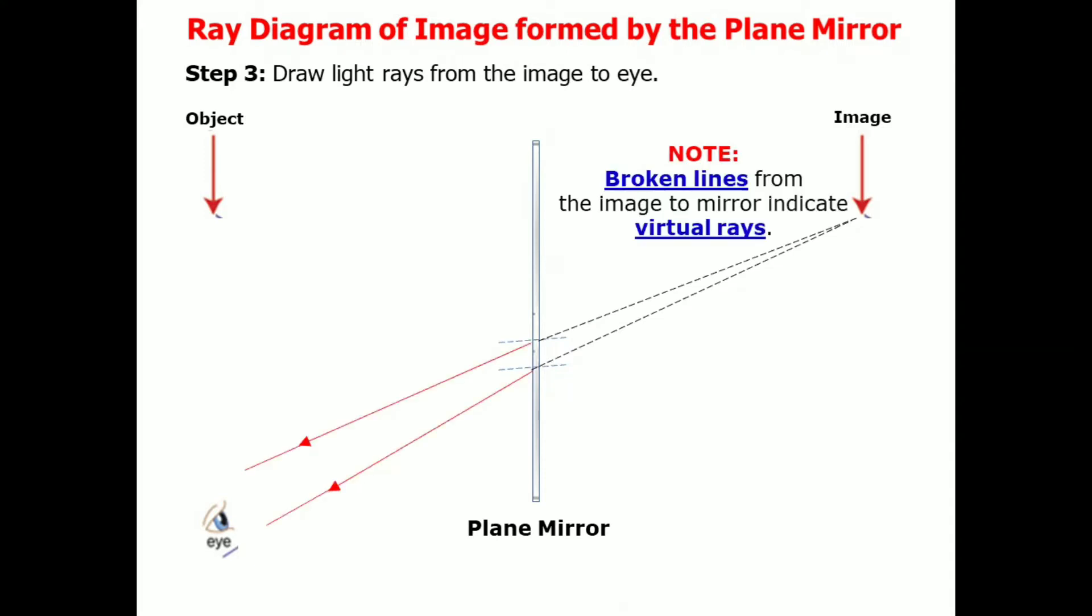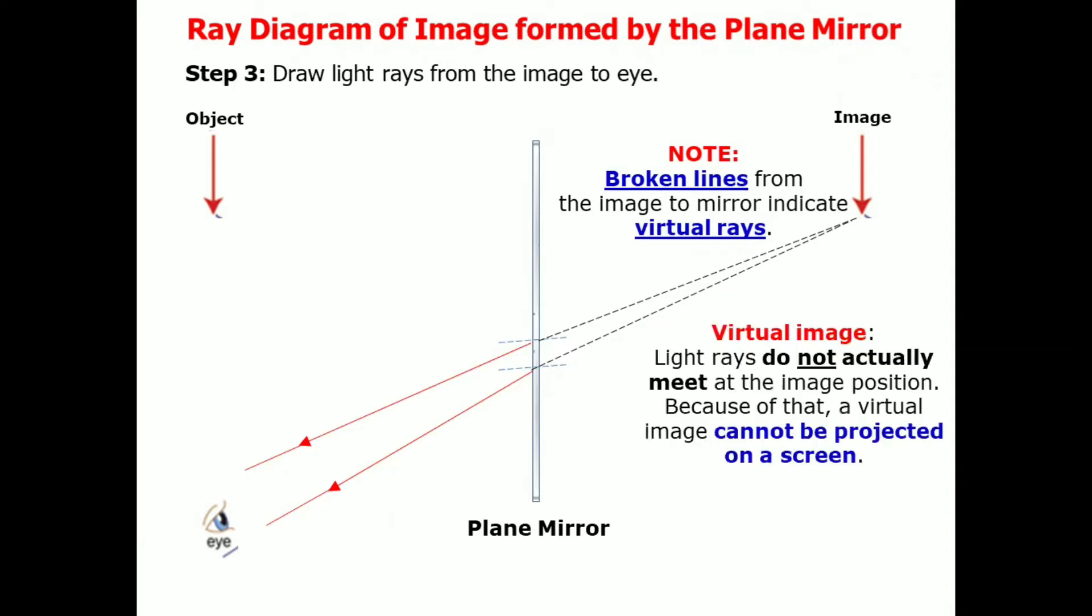If you observe, we use broken lines from the image to mirror to indicate that these are virtual rays. Because the plane mirror produces virtual image. And in virtual image, light rays do not actually meet at the image position. With that, a virtual image cannot be projected on a screen.